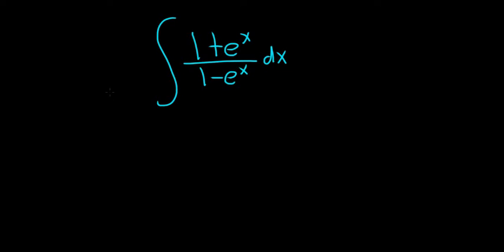Integrate (1 + eˣ) / (1 − eˣ) dx. So usually in these problems where you have e's in the numerator and or the denominator, you can try to make some type of substitution, or oftentimes there's a clever trick.